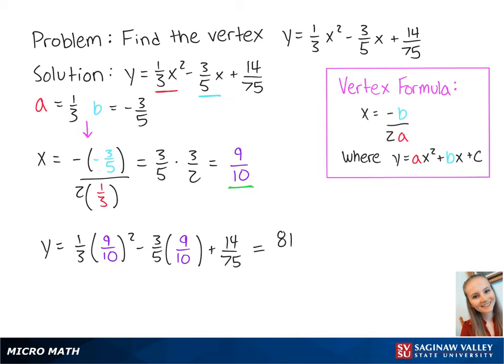This is equal to 81 minus 162 plus 56 all over 300, which is equal to one-twelfth.